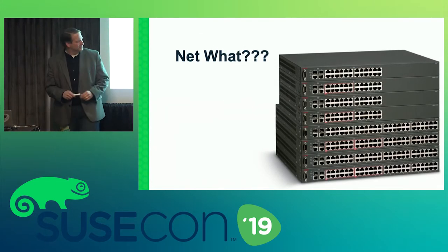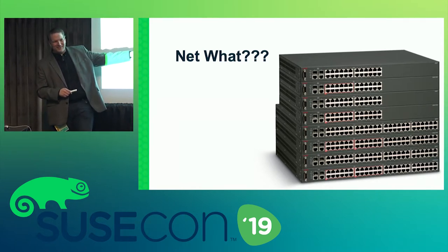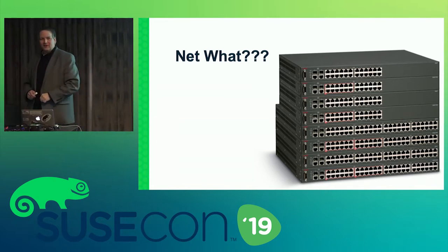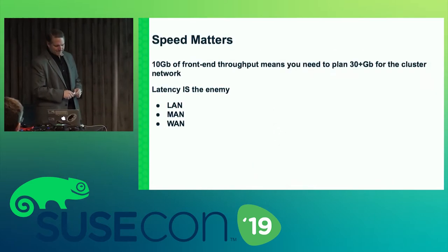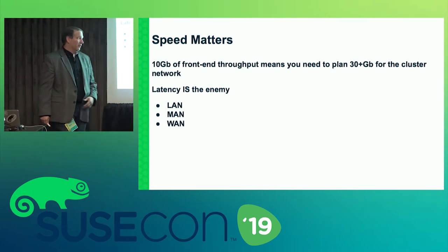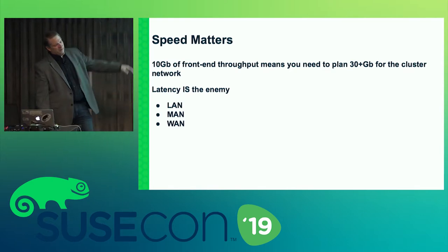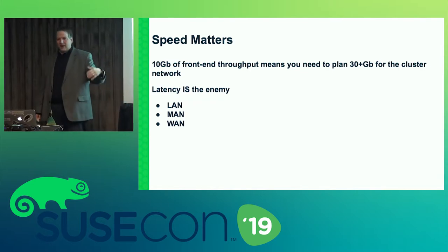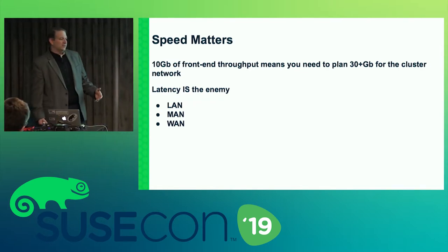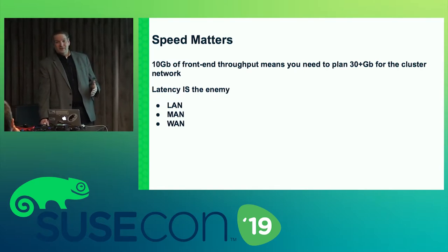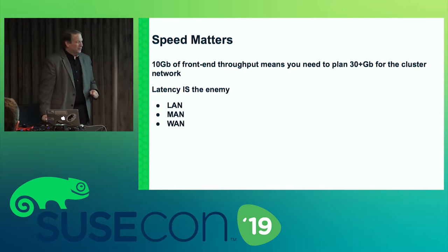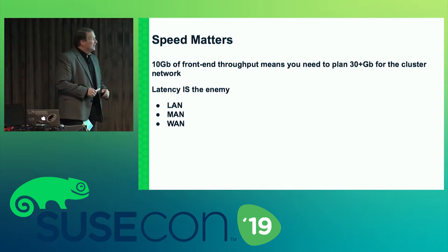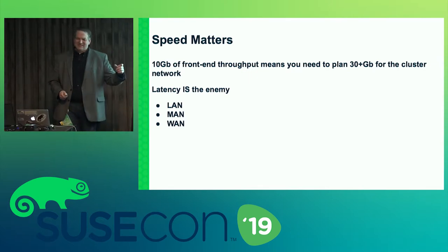Network switches — a very important consideration in Ceph. Speed matters. Latency is your enemy. I don't really like 10 gigabit. You have more bandwidth required for the back end of the cluster. You may not see it day-to-day, but you'll see it when something fails and you need to rebuild — because the Ceph cluster is going to go as fast as it can. So if you've got 10 on the front and 10 on the back, that's not a good design. With 3x replication, you need three times the amount of bandwidth on the back end that you have on the front.